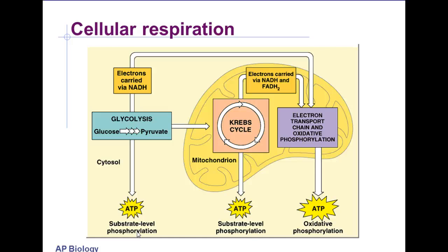Also write that the pyruvate molecules enter the mitochondrial matrix to be used in the Krebs cycle. Also write that the electrons now carried by NADH — not NADPH, that's photosynthesis — the NADH molecule will be used in the electron transport chain. A good way to remember it: the P in NADPH is in photosynthesis; NADH is in respiration.